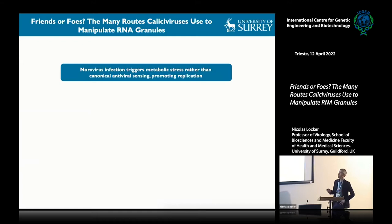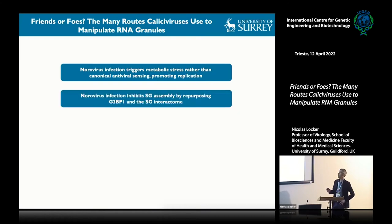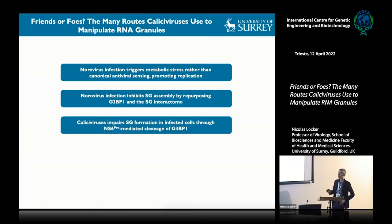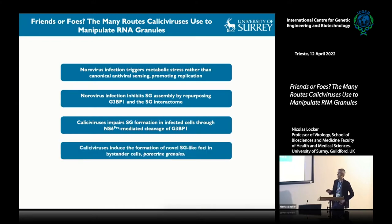What I will show during the talk is that norovirus infection induces metabolic stress rather than canonical antiviral sensing, which promotes viral replication. I will also show that norovirus infection inhibits stress granule assembly by repurposing G3BP1. I will show that other calicivirus viruses impair stress granule formation via a different mechanism—through cleavage of G3BP1 by a viral protease. And I will finish by describing novel stress granule-like foci assembled in infected cells in response to calicivirus infection, which we named paracrine granules.